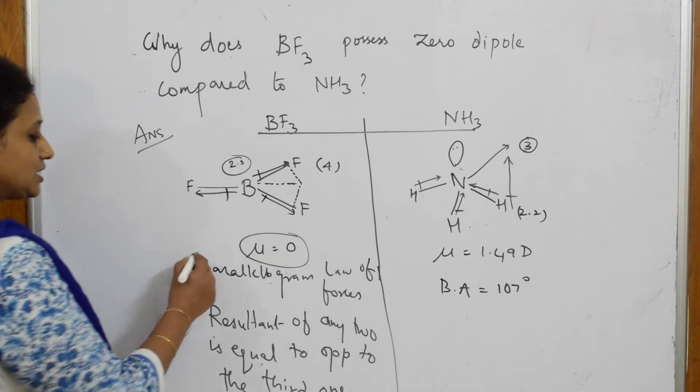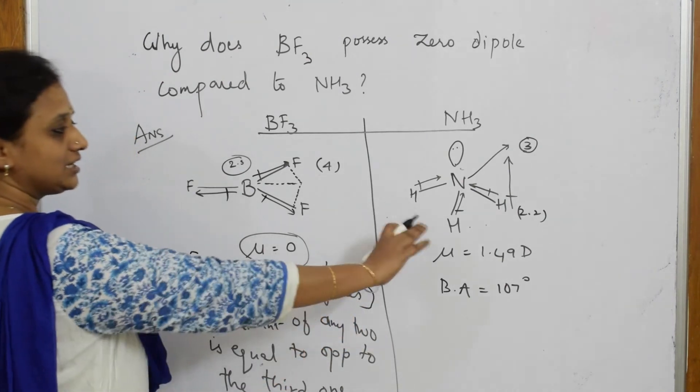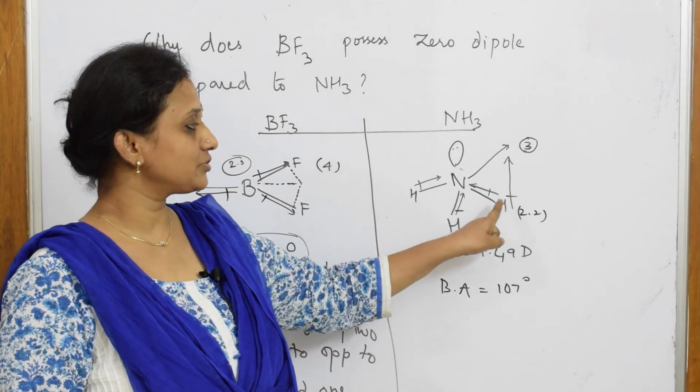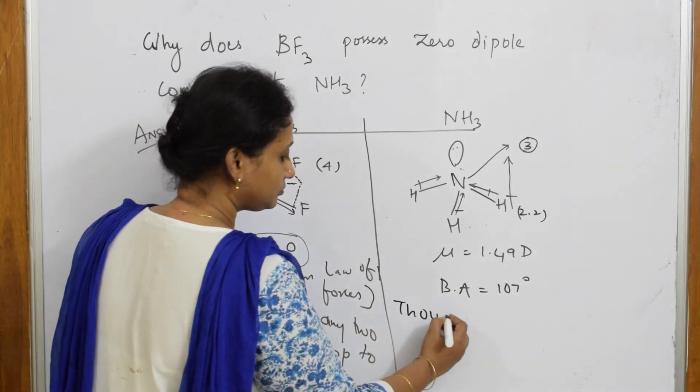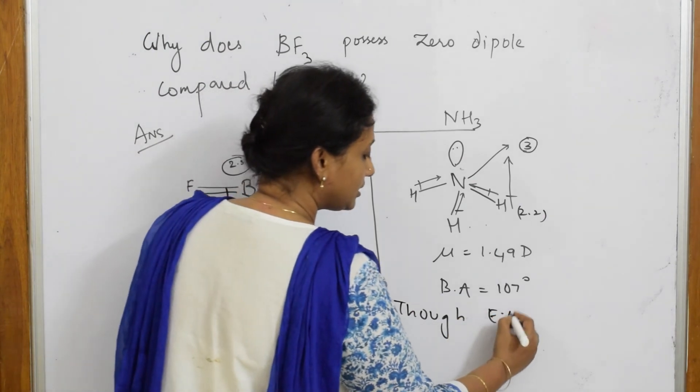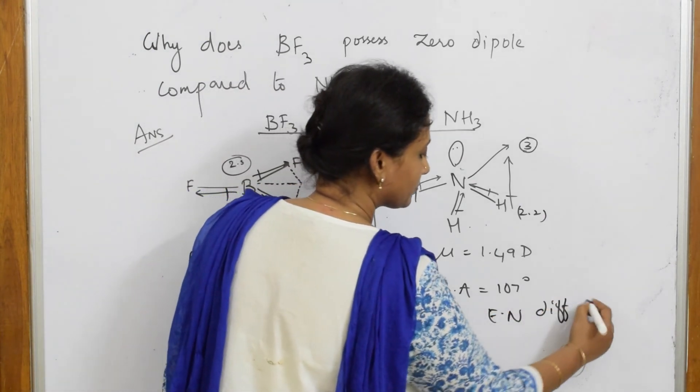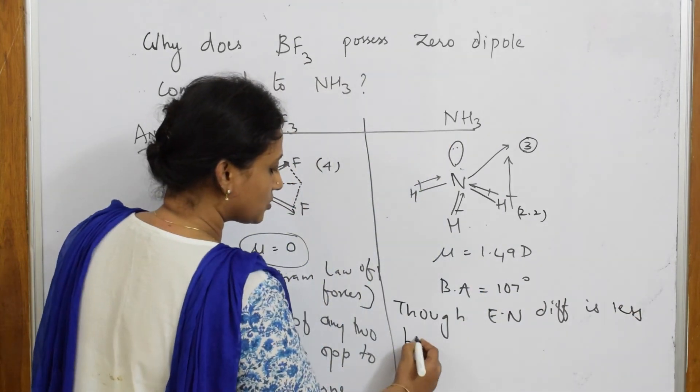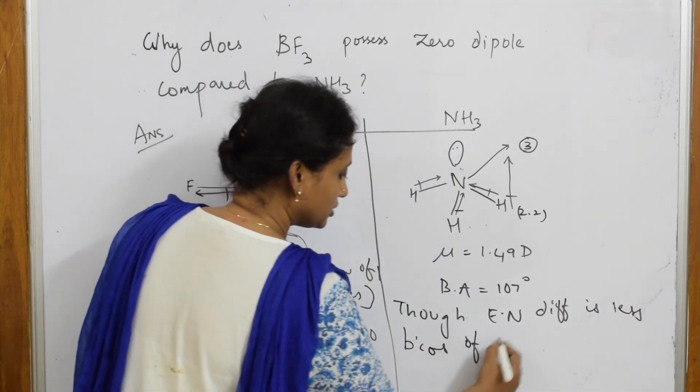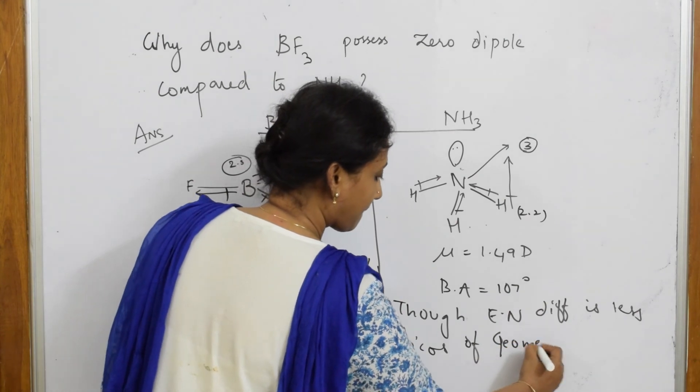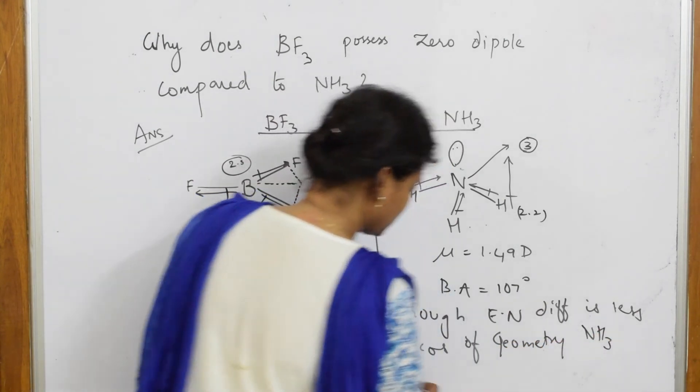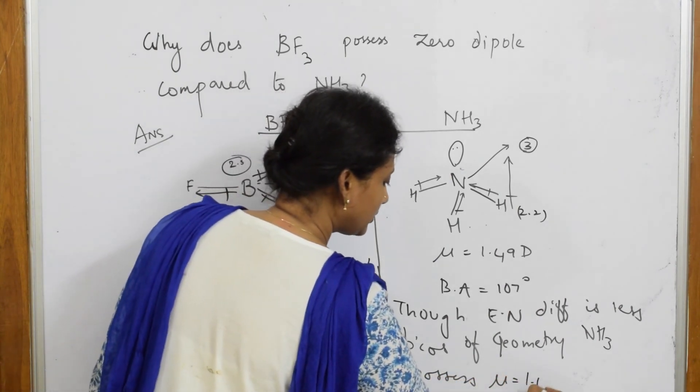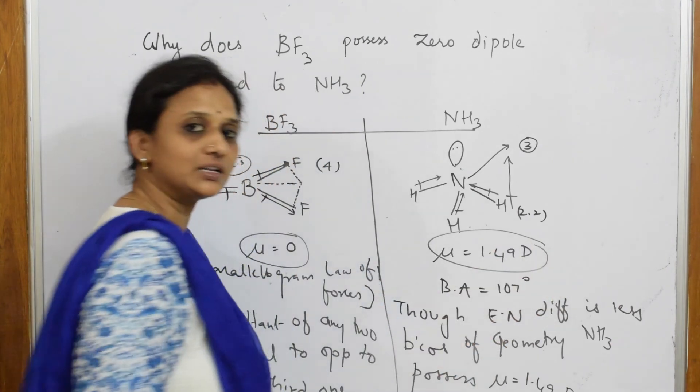So because of the parallelogram law of forces, this has attained this law. Though electronegativity difference is less, because of geometry, ammonia has mu is equal to 1.49 D. This is how you go to the answer.